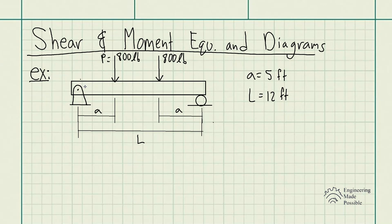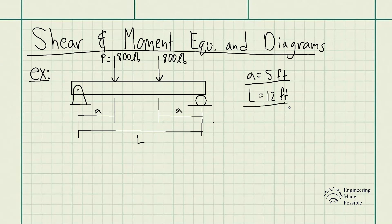First, we're asked to draw the shear and moment diagrams in variable form — keeping A as A, L as L, and P as P — instead of inputting numbers. We first derive the equations all in variable form so that in the future we can plug in any values and solve for shear and moments throughout the entire beam. The numbers are important after the fact, and you can always plug different dimensions into these equations.